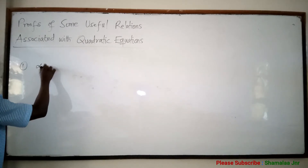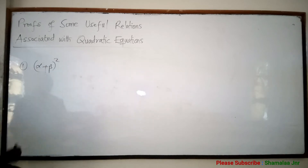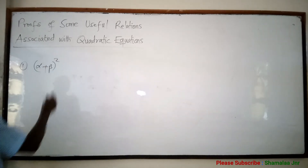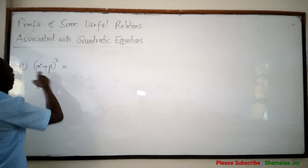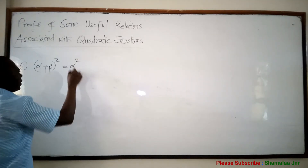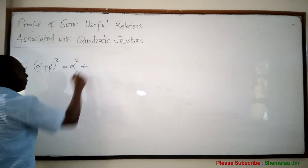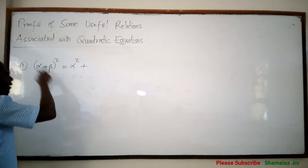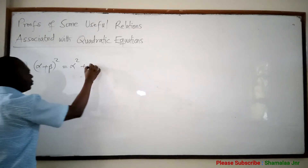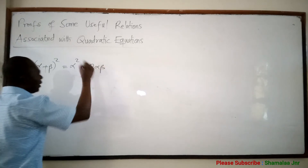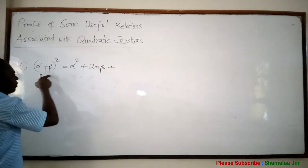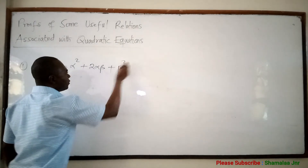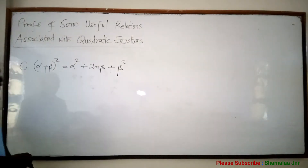Look on the board. When you have alpha plus beta all squared, and you are asked to expand this, you are going to say alpha squared plus this times this — now that is alpha beta times two — so two alpha beta, plus the last one squared, beta squared.